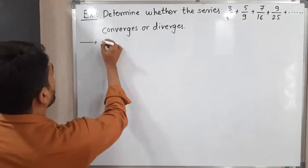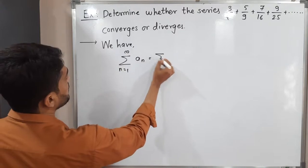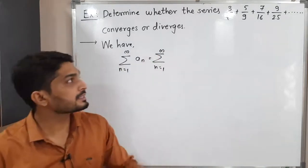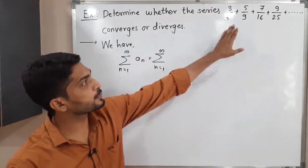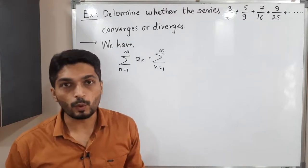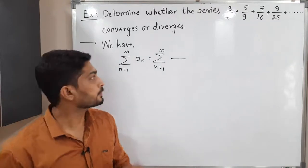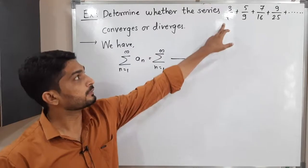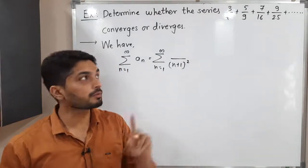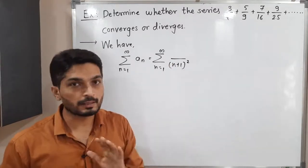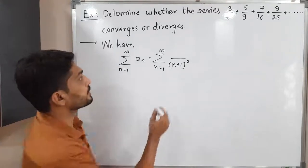Let me write the given series first. I will call it as series summation, n running from 1 to infinity. The series is given in expanded form, but I will try to express it in summation form. If you observe the denominator: 4, 9, 16, 25 — all these are perfect squares. We cannot write n² directly because putting n=1 gives 1, not 4. So I will write (n+1)². Putting n=1 gives 2²=4, n=2 gives 3²=9 — perfect. For the numerator: 3, 5, 7, 9 are all odd numbers, so I write 2n+1.